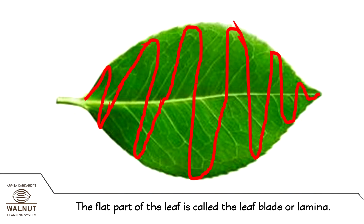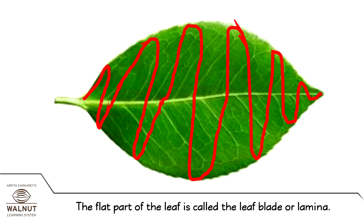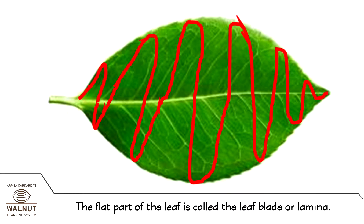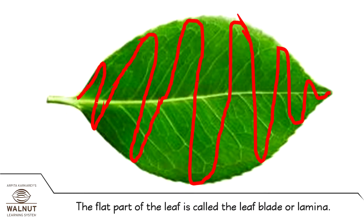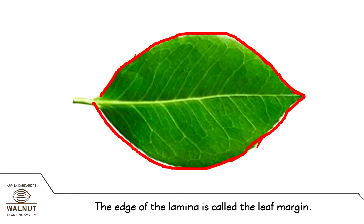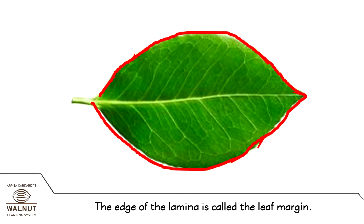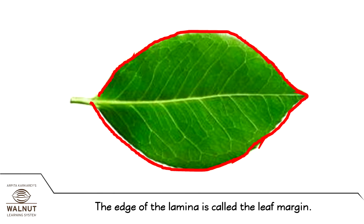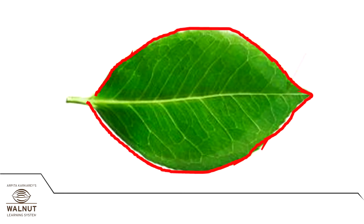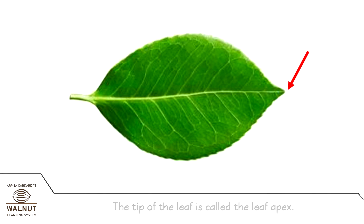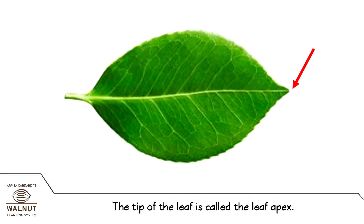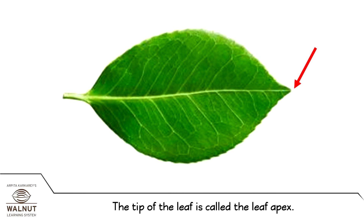The flat part of the leaf is called the leaf blade or lamina. The edge of the lamina is called the leaf margin. The tip of the leaf is called the leaf apex.